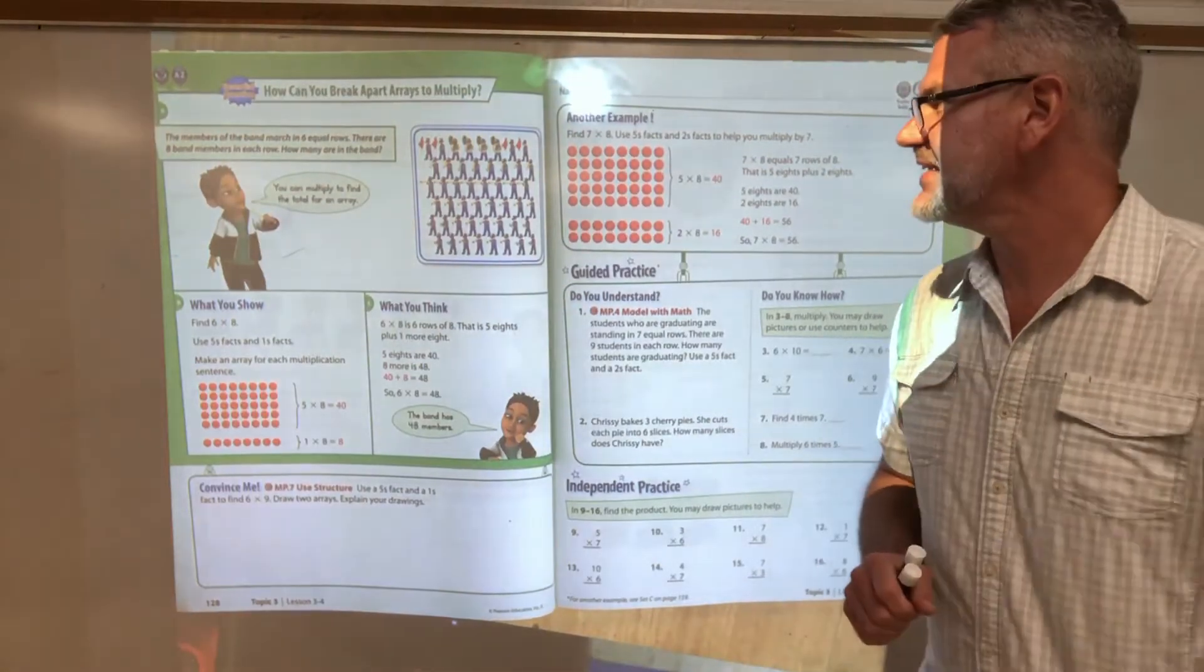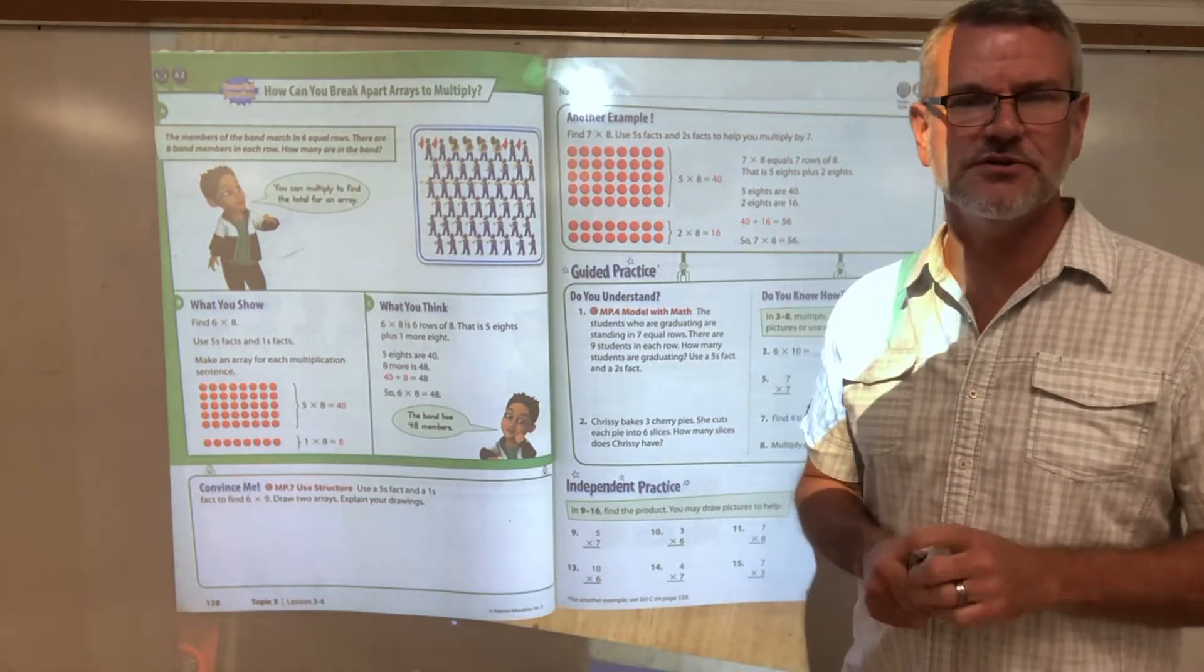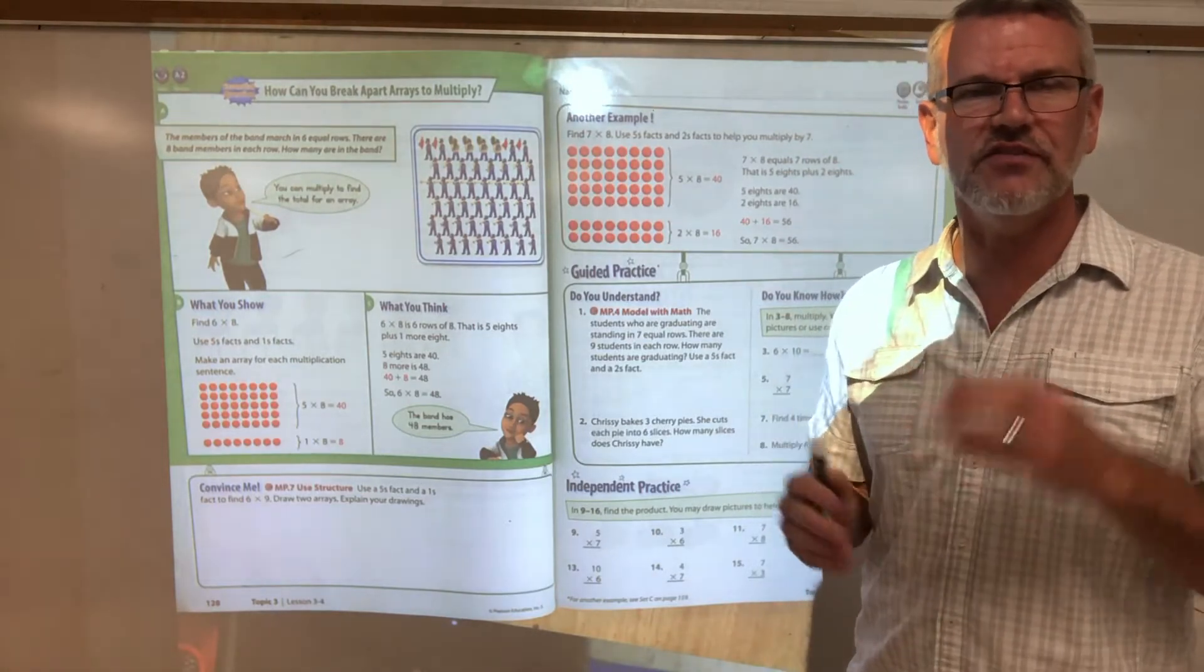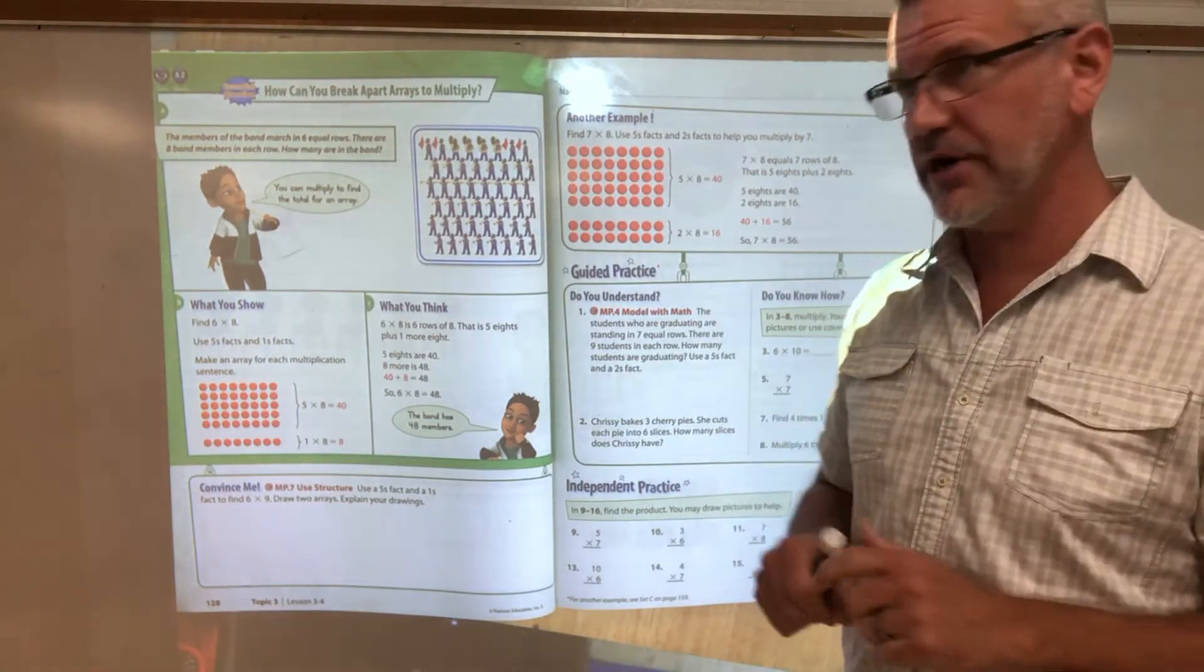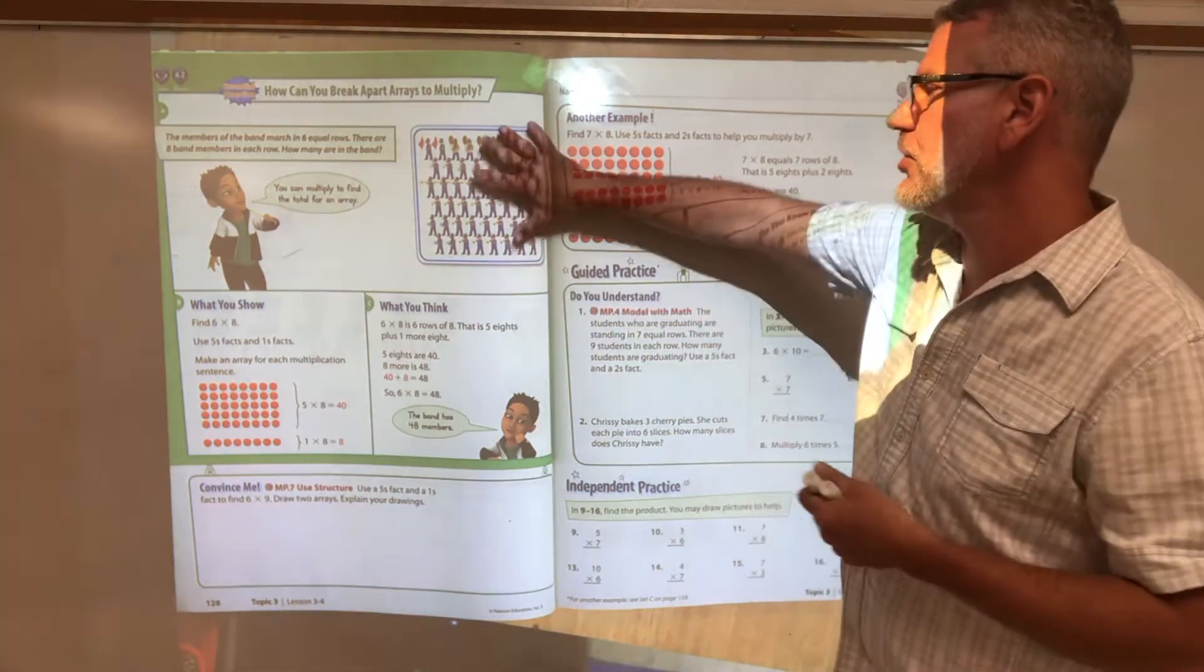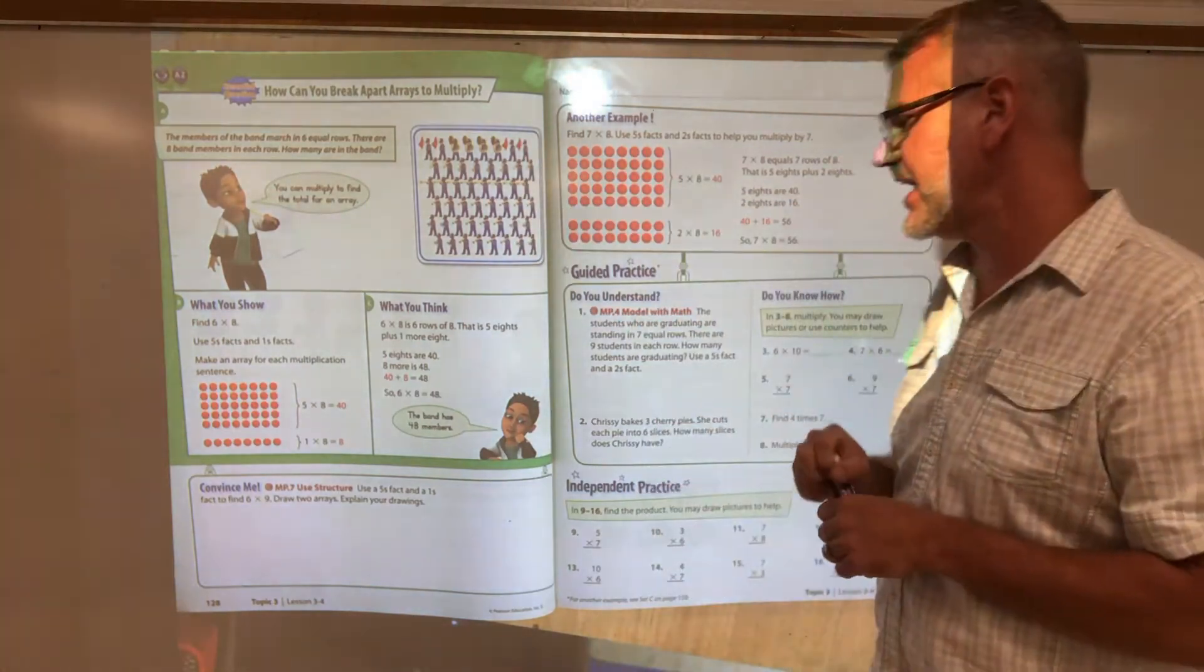We're back on the board here. I've been skipping the videos because this all falls into the same idea of distributive property. Breaking apart a large array into two small arrays and figuring that out.